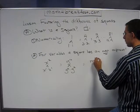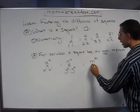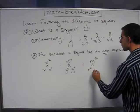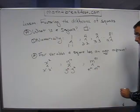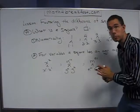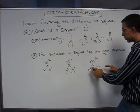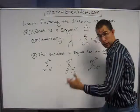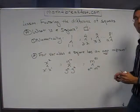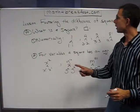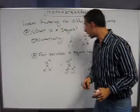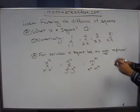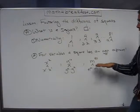Let me try that again — m to the eightieth. That would be m to the fortieth times m to the fortieth, because eighty is an even number and I can split it into forty plus forty. Ten is even — five plus five. Two is even. Got the pattern here.